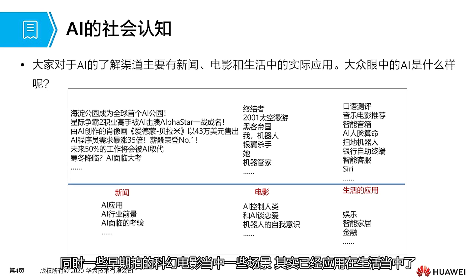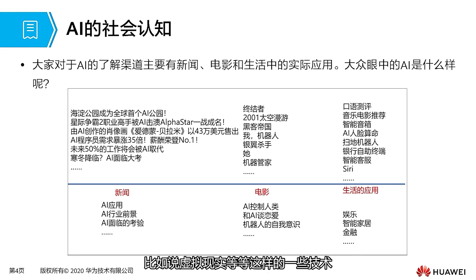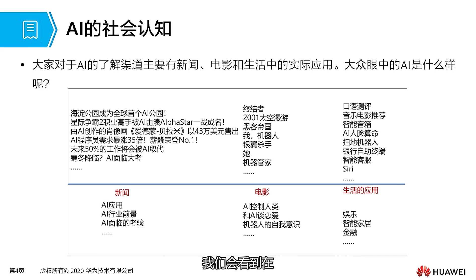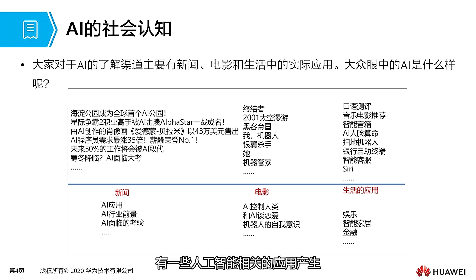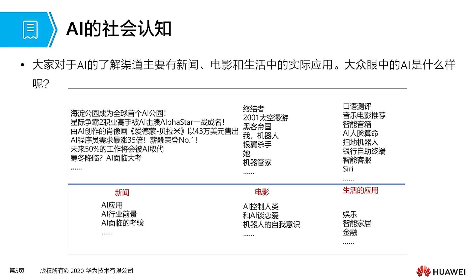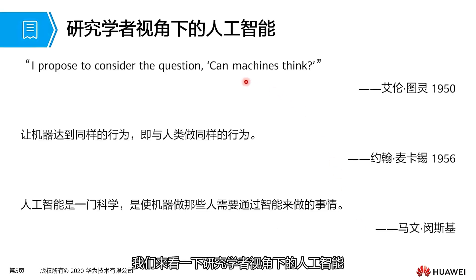Some scenes from early science fiction films anticipated AI scenarios. At the same time, AI is already being applied in our daily lives — for example, technologies like virtual reality. There are also applications related to daily life appearing in entertainment and other scenes, which we will introduce later.